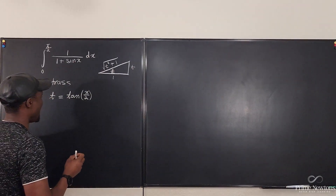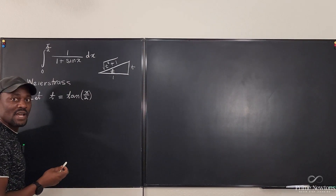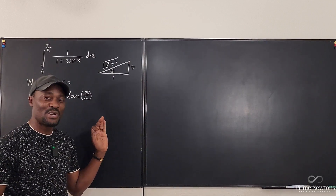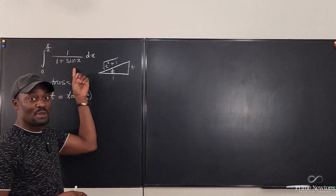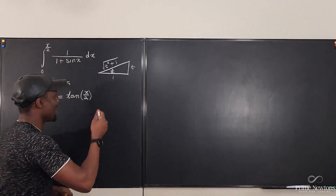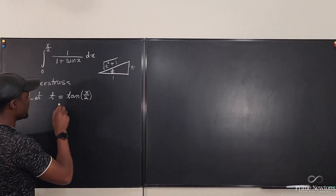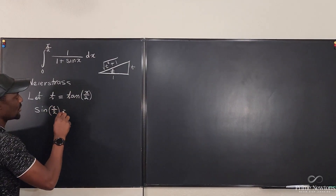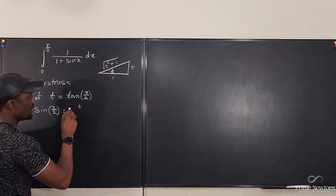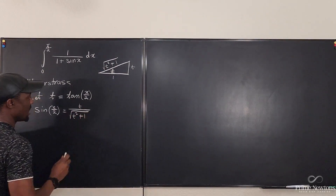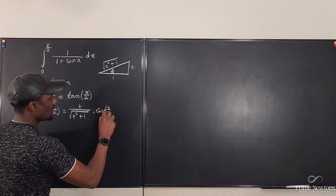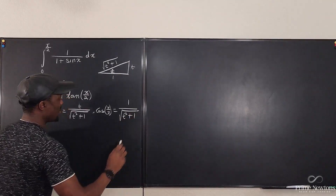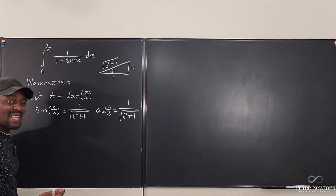Go ahead and find what sine and cosine will be because that saves the day — we're going to use them. If you've done this several times you already know what it will be, but let me show you. Sine of x over 2 is the opposite over hypotenuse: t over the square root of t squared plus 1. And cosine of x over 2 is 1 over the square root of t squared plus 1.